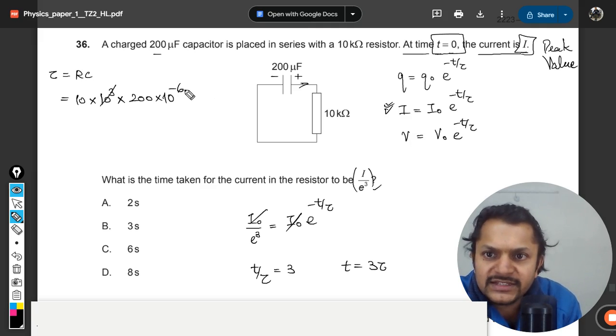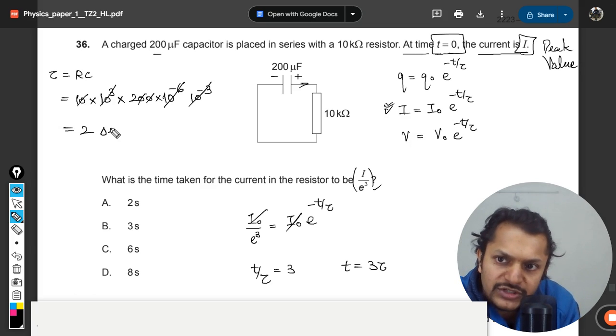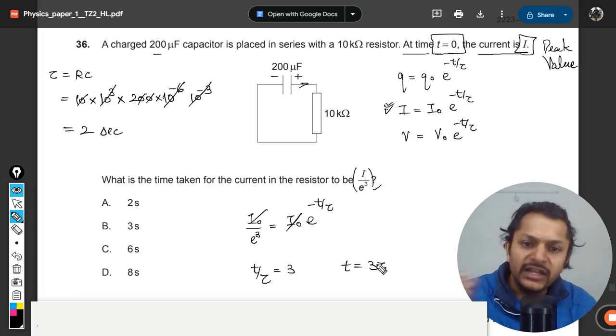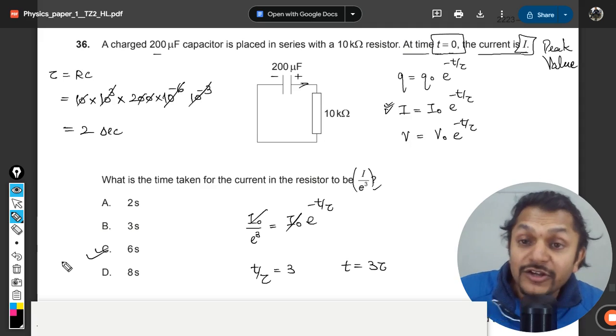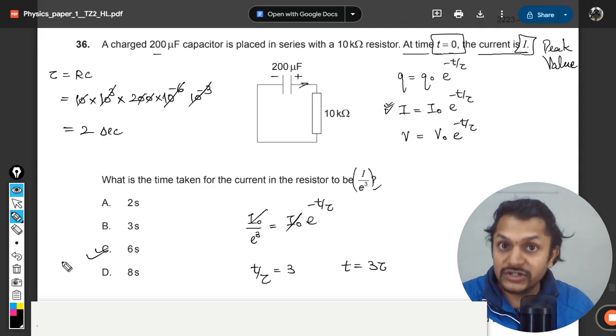It is 10×10³ Ω and 200×10⁻⁶ F because it is microfarad. So this gets cancelled out, negative 3 cancels with 3 zeros, and the time constant comes out to be 2 seconds. We multiply it with 3, and the answer comes out to be equal to 6 seconds. So this is how we do this question.